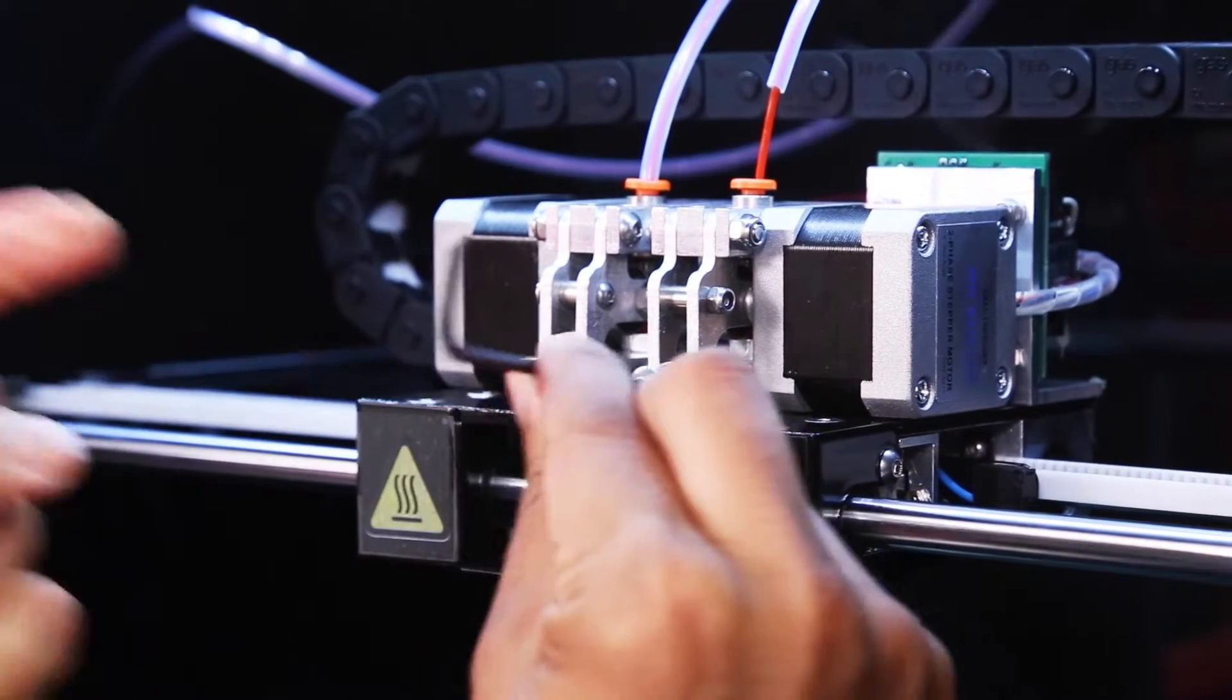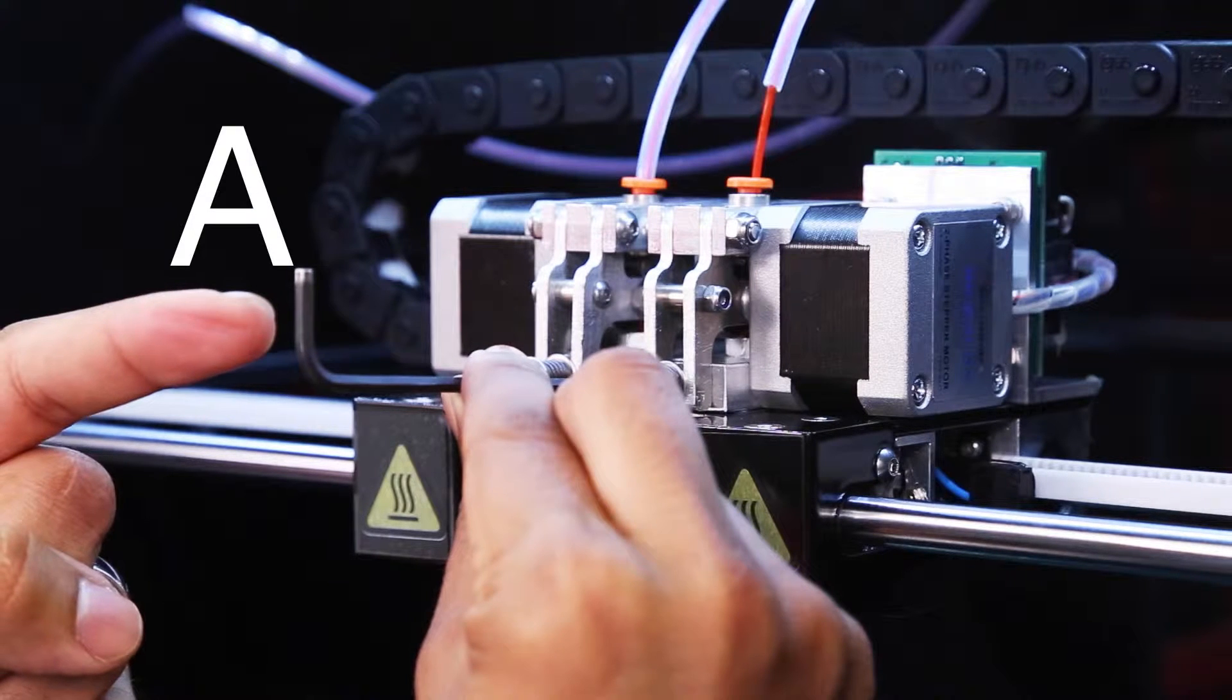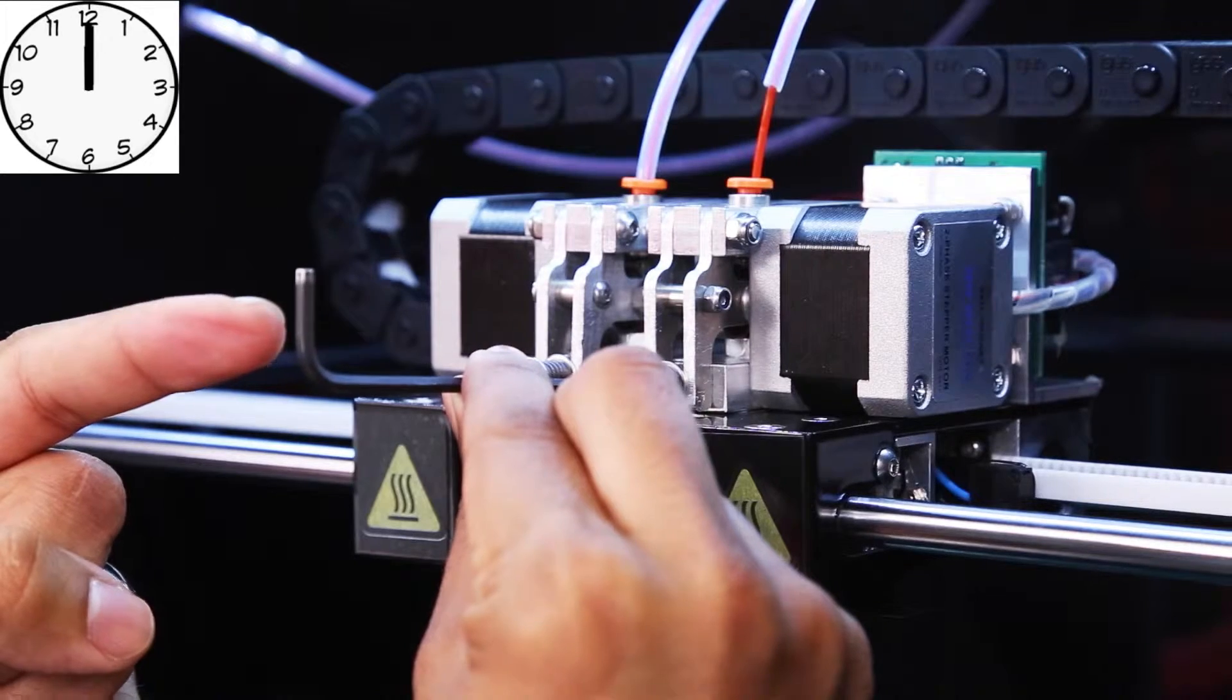Insert the Allen key into the tension screw. Make a note of what position it's in. Let's call this position A and identify the position as though it was a clock face. For example, 12 as shown.